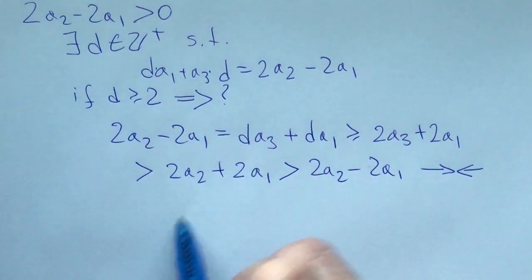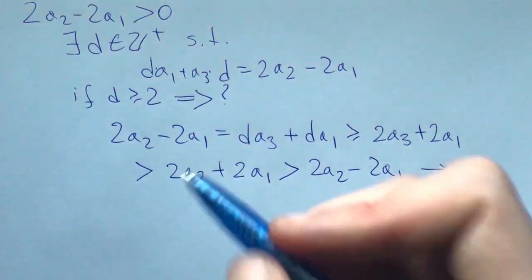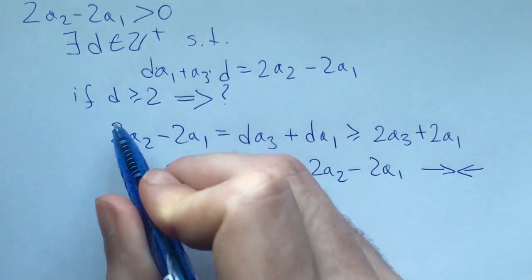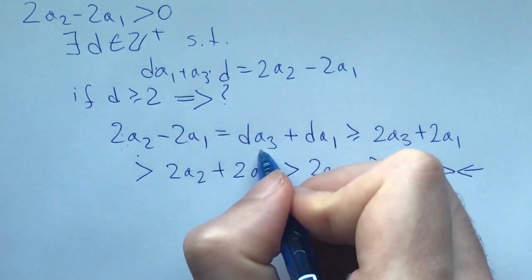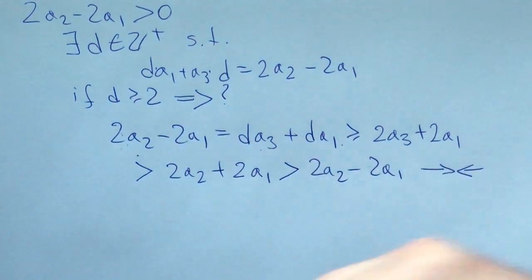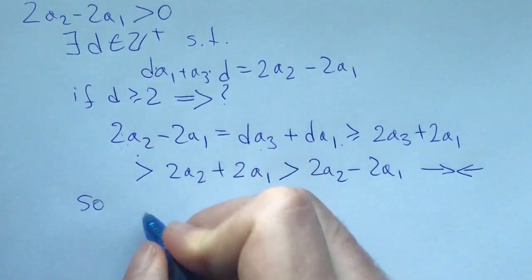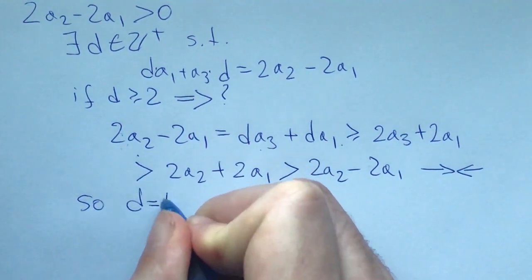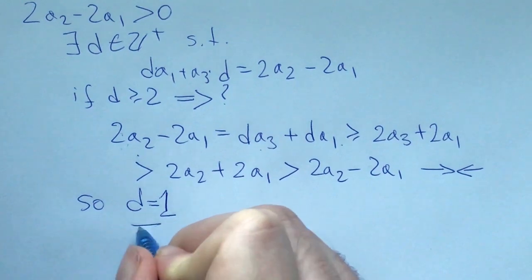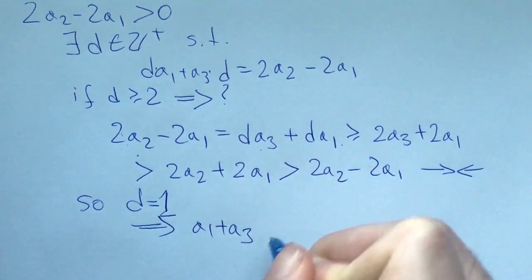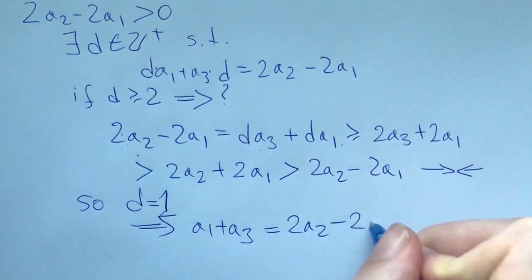This might seem magic at first, but in reality what I was doing is thinking this thing right here isn't that much bigger than a3 + a1, it can't be too big, and then I just formalized it with this. So d must be equal to 1, which means that a1 + a3 equals 2a2 - 2a1.